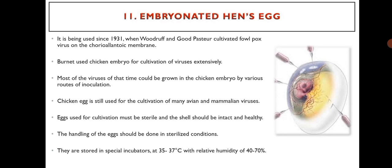Embryonated egg has been used since 1931 when Woodruff and Goodpasture cultivated fowlpox virus in the chorioallantoic membrane of embryonated hen's egg. Burnet used chicken embryo for cultivation of viruses extensively. Most of the viruses of that time could be grown in the chicken embryo by various routes of inoculation.